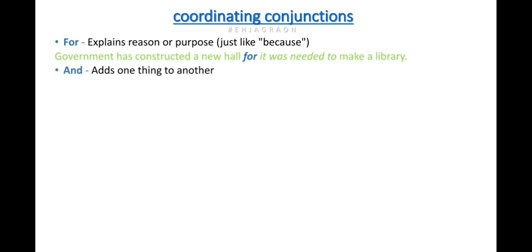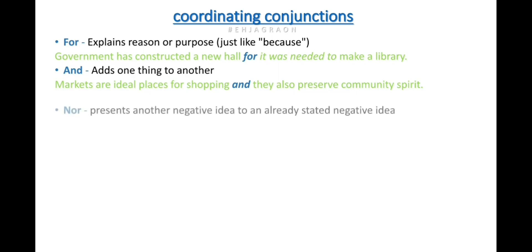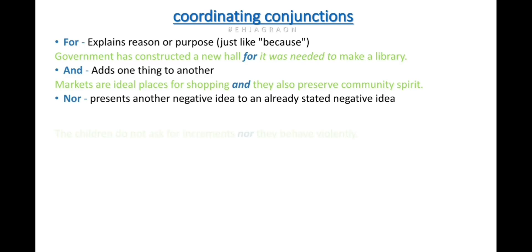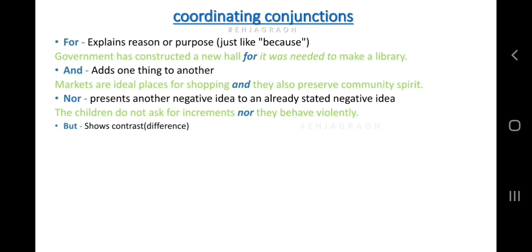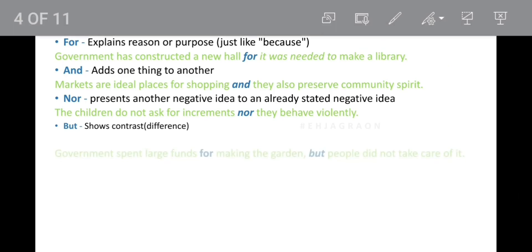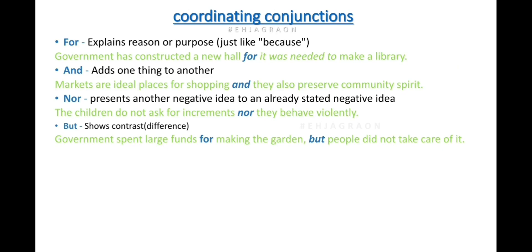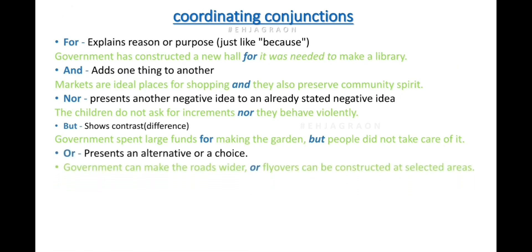'And' adds one thing to another. 'Nor' presents another negative idea — for example: 'Children do not ask for increments, nor do they behave badly.' 'But' shows contrast or difference — for example: 'The government spent large funds for making the garden, but people did not take care of it.' 'Or' gives alternatives — for example: 'Government can make the roads wider, or flyovers can be reconstructed at selected areas.'